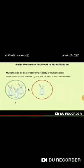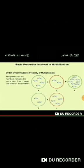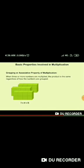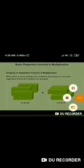Multiplication by one or identity property of multiplication: when we multiply a number by one, the product is the same number. Order or commutative property of multiplication: the product of two numbers remains the same even if we change the order of the numbers. Grouping or associative property of multiplication: when three or more numbers are multiplied, the product is the same regardless of how the numbers are grouped.